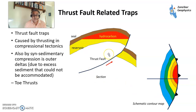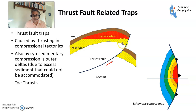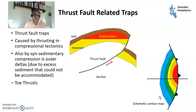Then you have thrust-related traps, which occur under compression with failure along a thrust fault. This is the upthrown side of the thrust fault — the footwall and hanging wall. You've got the reservoir, a seal, and the fault, with hydrocarbons sitting in there. This is a thrust fault with thrust fault symbols, dipping in this direction. It's relatively simple compared to some other traps and can reach quite high volumes.